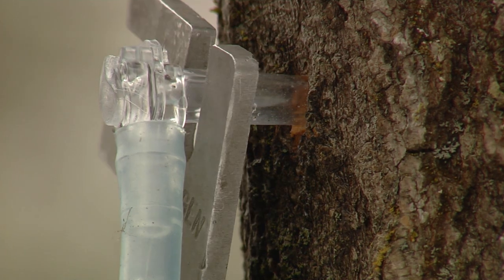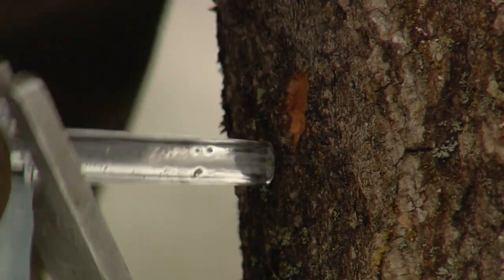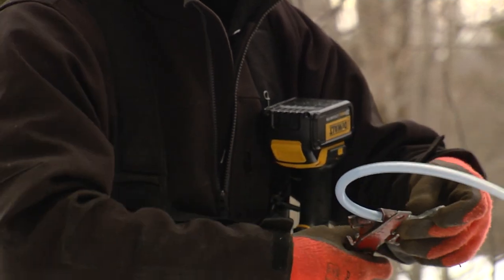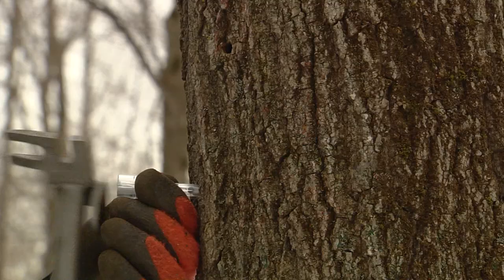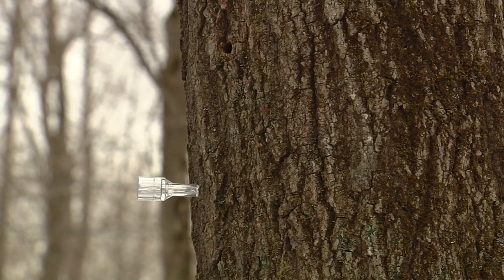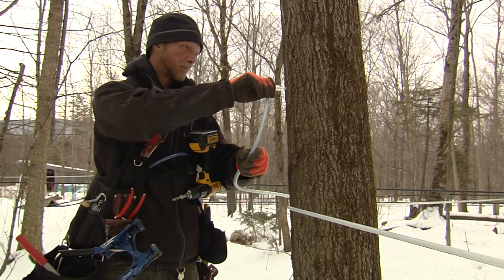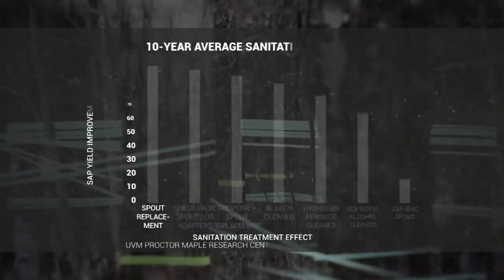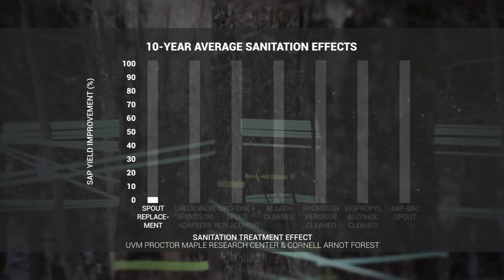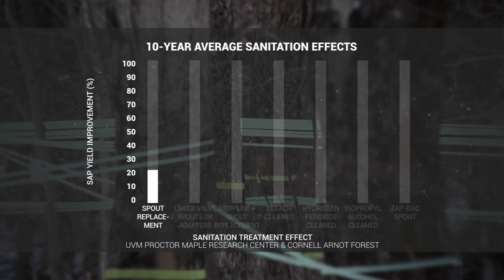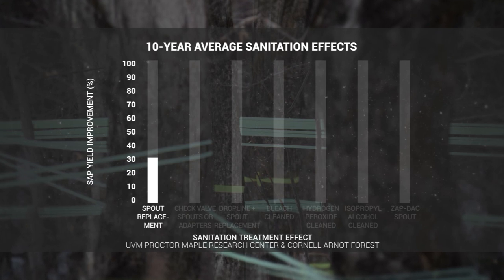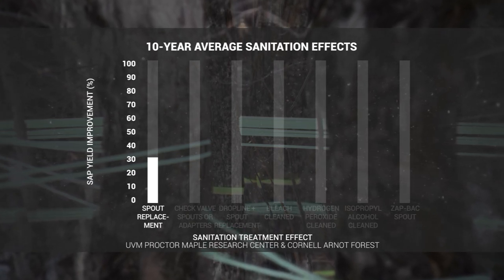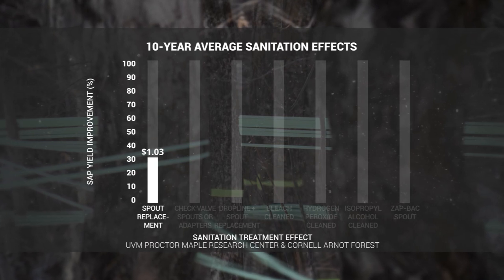The simplest replacement strategy is annual spout replacement. In some cases, producers will cut off the old spout and replace it with a new spout prior to the new season. Others opt to use a spout adapter and stubby spout system to speed up the replacement process. Research shows that new spouts improve sap yields by about 30%, compared to not cleaning or replacing spouts, producing an average net gain of about a dollar per taphole.